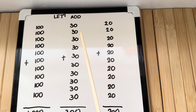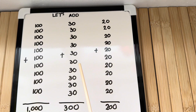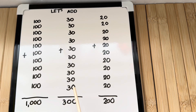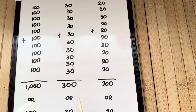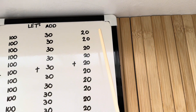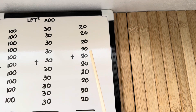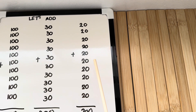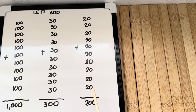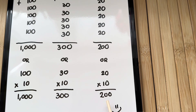Next, 30 plus 30 plus 30 plus 30 plus 30 plus 30 plus 30 plus 30 plus 30 is equals to 300, or 30 times 10 is equals to 300. Last example: 20 plus 20 plus 20 plus 20 plus 20 plus 20 plus 20 plus another 20 is equals to 200, or 20 times 10 is equals to 200.